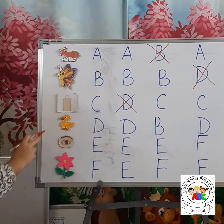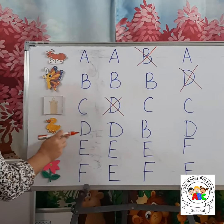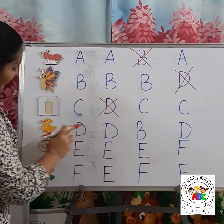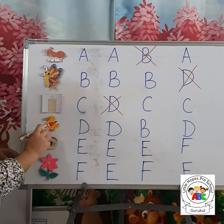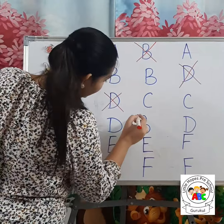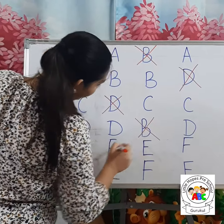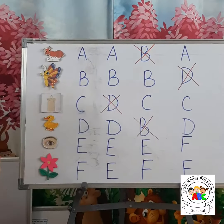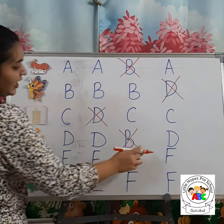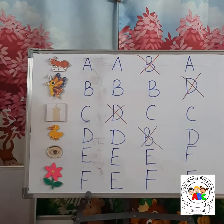Now let's go to the next picture — that is our Duck. D for Duck. This is not D, this is letter B. So let's put a cross. D for Duck.